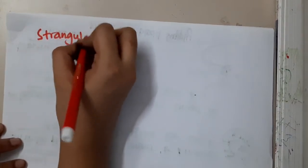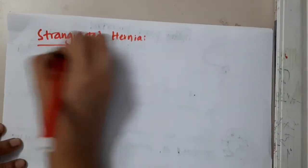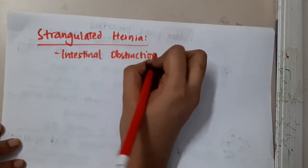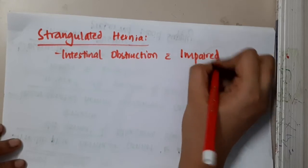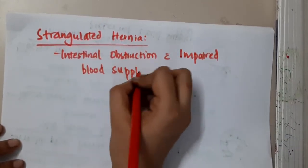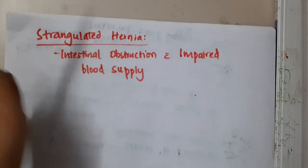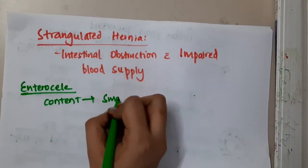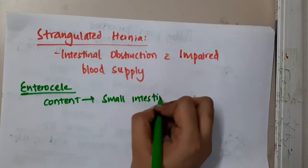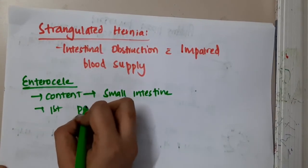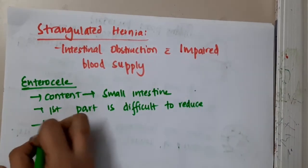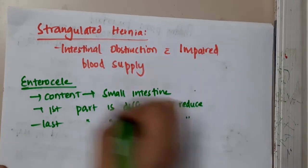Then we have strangulated hernia. In strangulated hernia, intestinal obstruction is present with impaired blood supply — that is strangulated hernia. Then we have enterocele: the content of the hernia is small intestine. If you try to reduce it, the first part is always difficult to reduce, whereas the last part is easier to reduce.